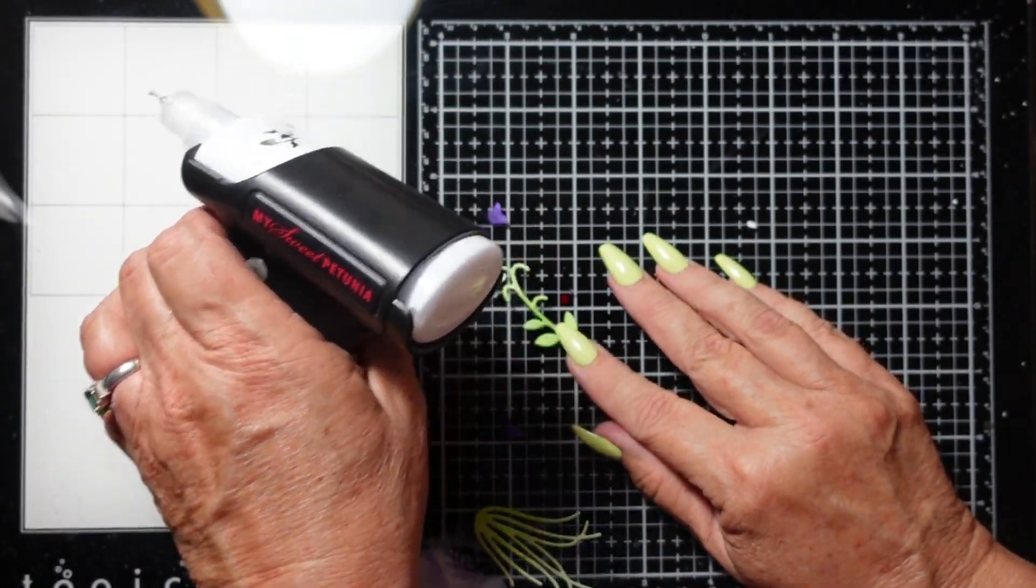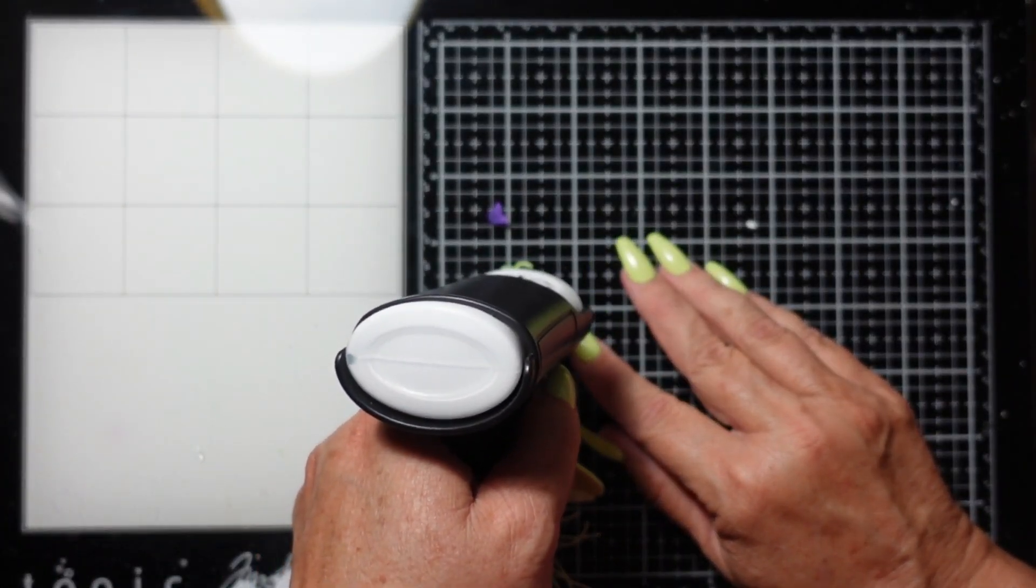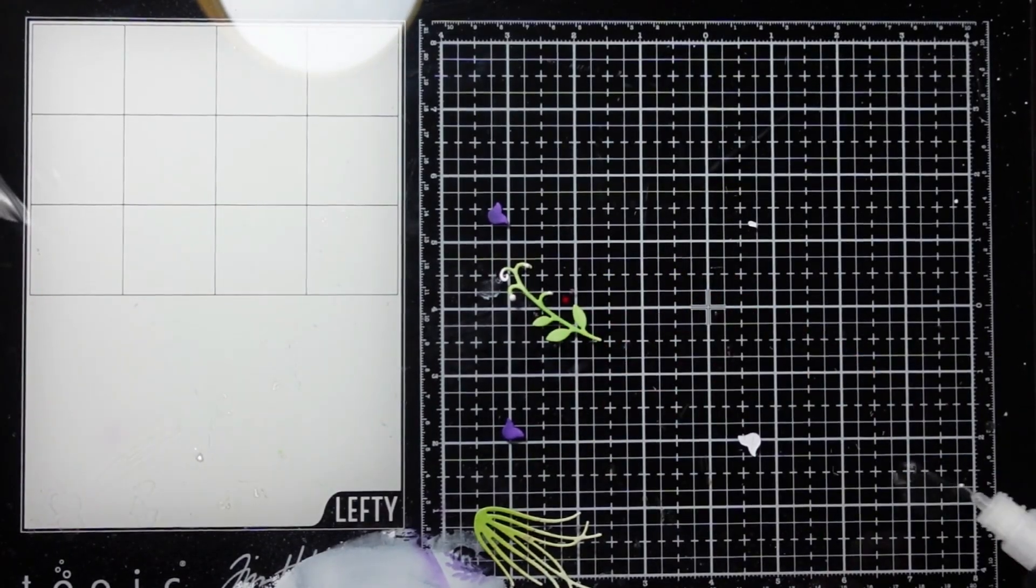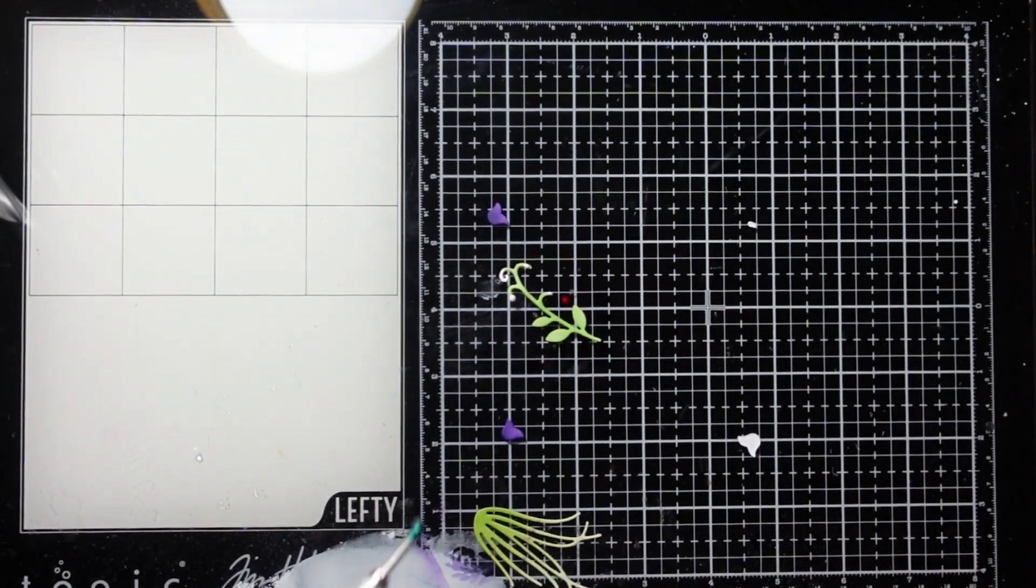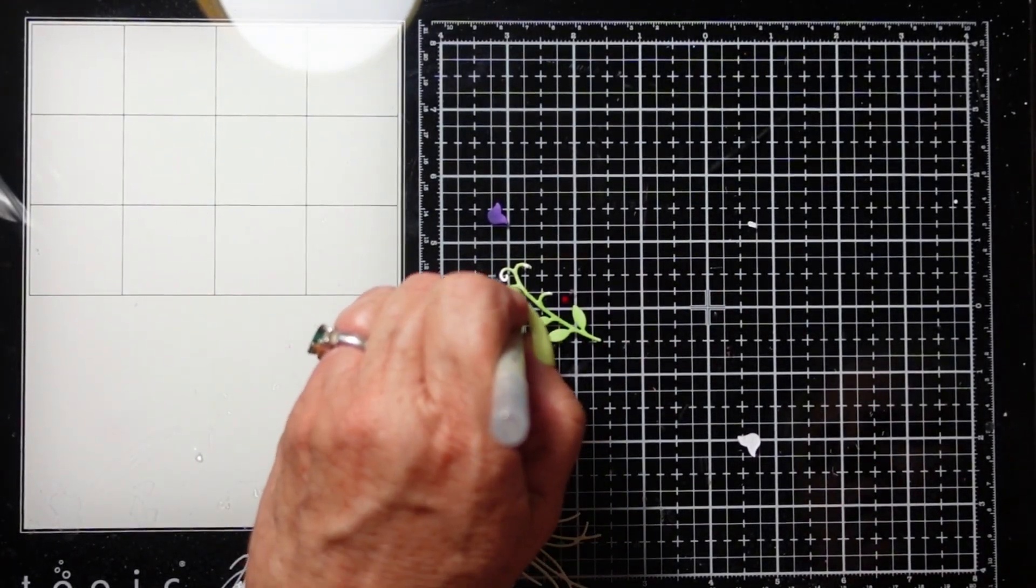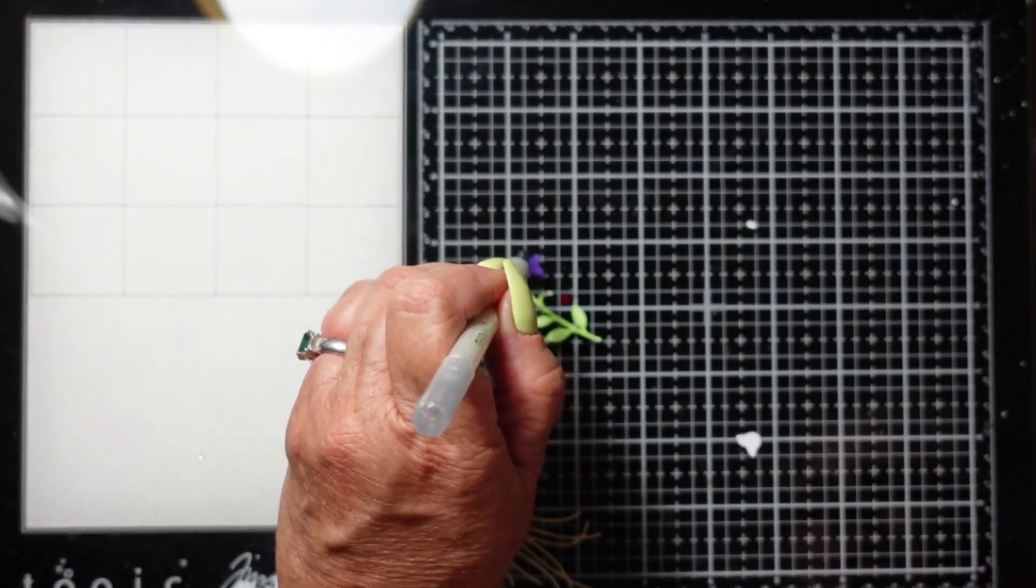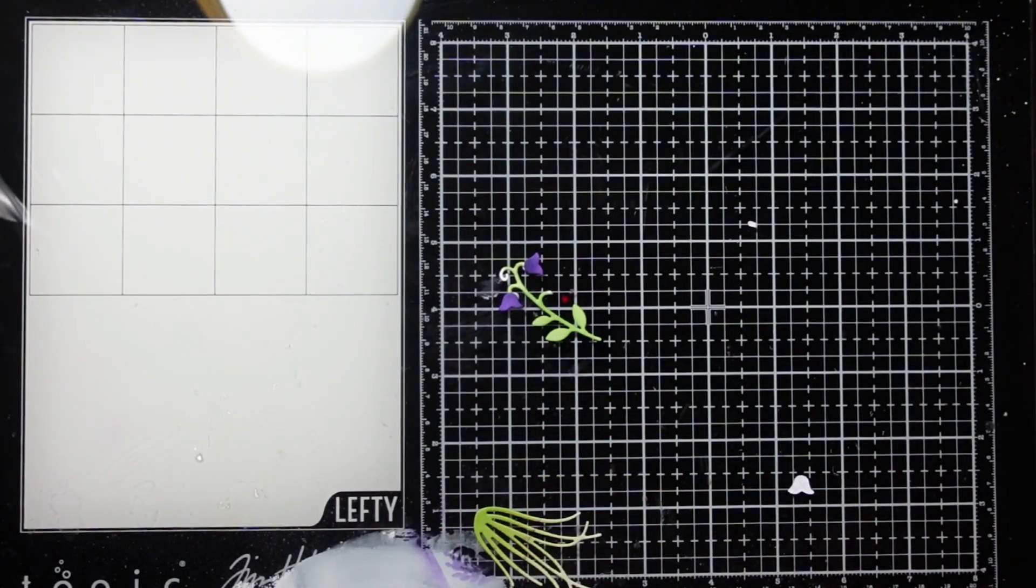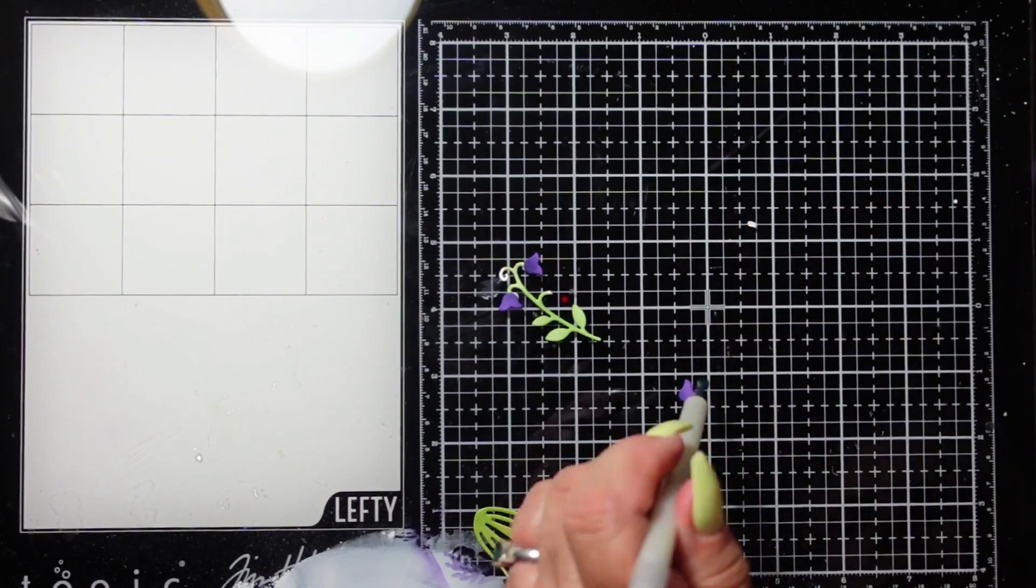Here I'm just using my Precision Glue Press to add a little bit of glue to the tips of the stems so I can add my little bluebells. Initially, I decided to cut three of the bluebells.